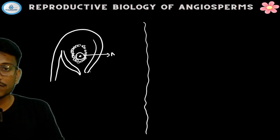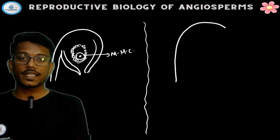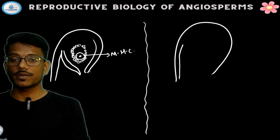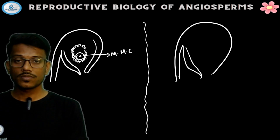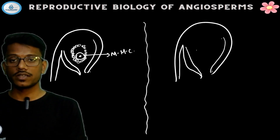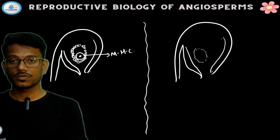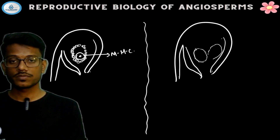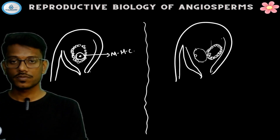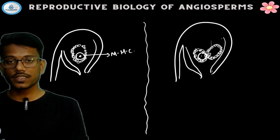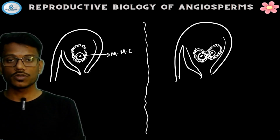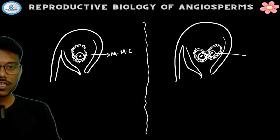So from this process, we get two megaspore mother cells. Each megaspore mother cell, being a diploid cell, undergoes the process of meiosis to produce four haploid cells.